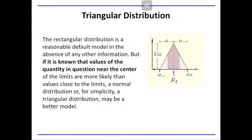Triangular distribution, on the other hand, is another reasonable default model in the absence of any other information, similar to rectangular distribution. It may be used in baseline studies where you are the first to study a particular analyte. But if it is known that the values of the quantity near the center of the limits are more likely than values close to the limits — meaning there is a low likelihood of extreme values — then triangular distribution must be used. Like the Gaussian distribution, most of the values gravitate towards the mean value.